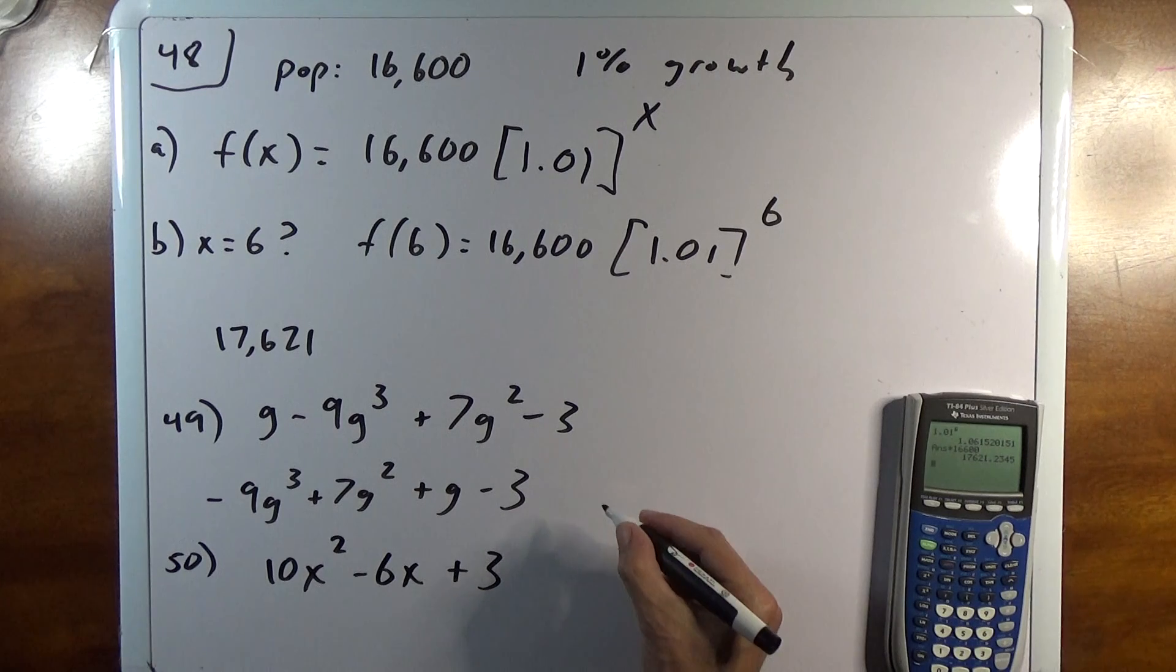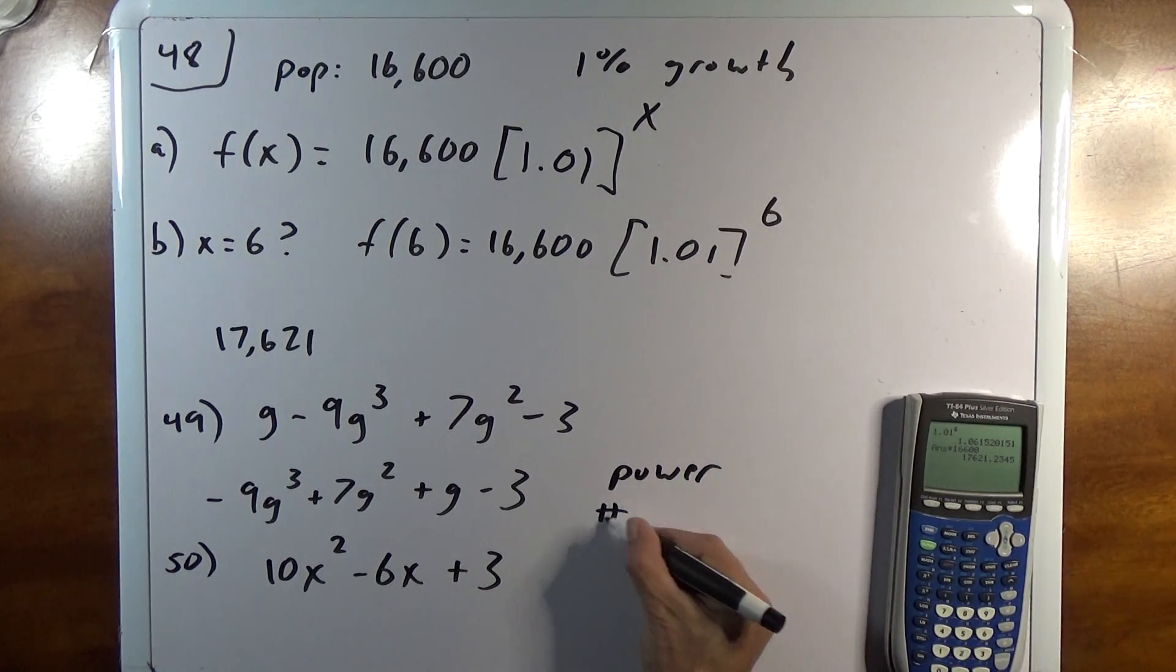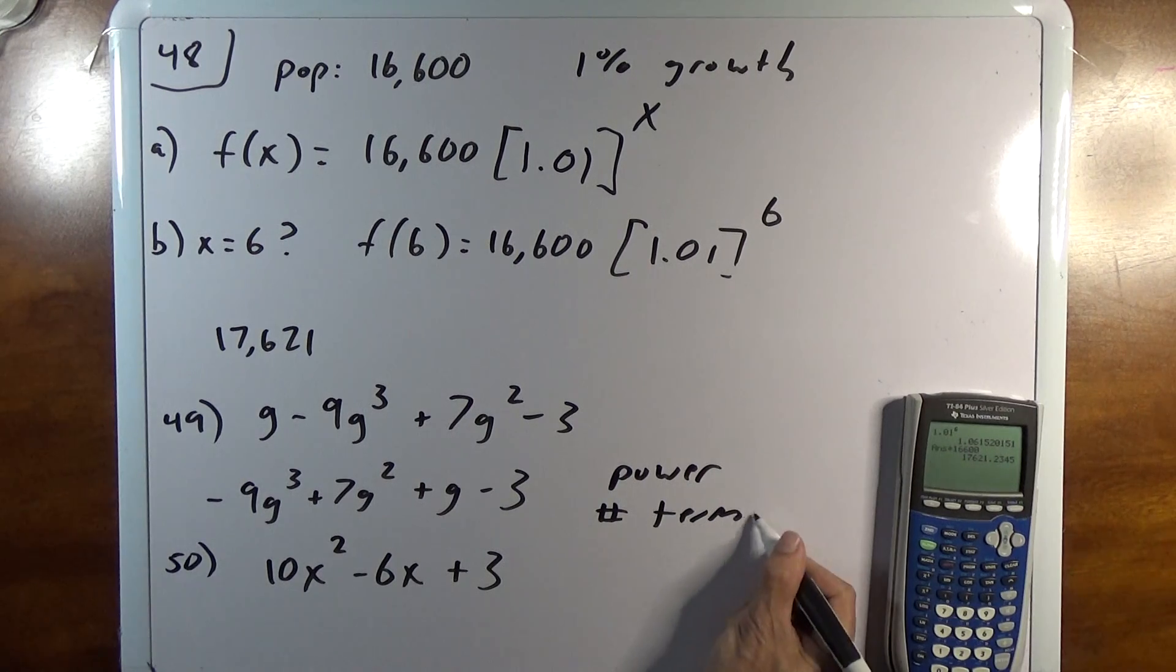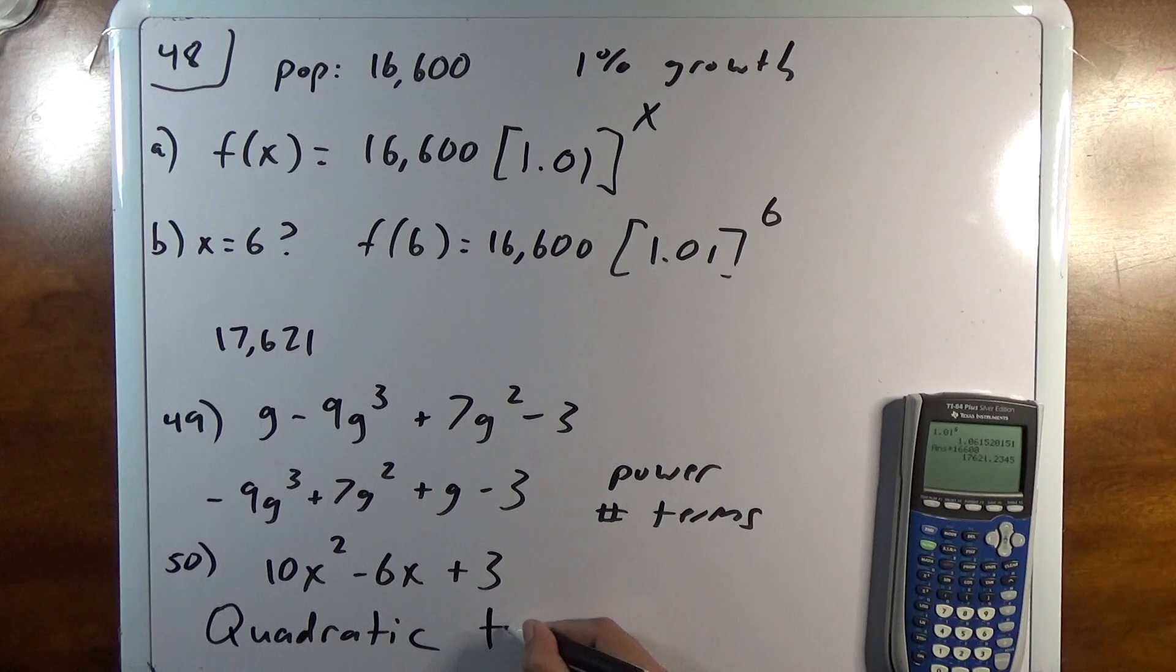What that usually means is classify by power and number of terms. So it's in descending order, so my highest power is the leading term, power of the leading term, which is 2. So that is a quadratic. And then I have 1, 2, 3 terms. So that's a trinomial.